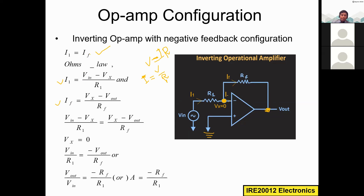According to KCL, I1 equals If, so we substitute: (Vin minus Vx) divided by R1 equals (Vx minus Vout) divided by Rf. Now we apply the virtual ground result — Vx equals zero. Substituting zero for Vx, we get Vin divided by R1 equals minus Vout divided by Rf.